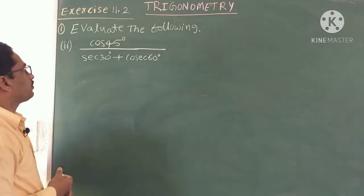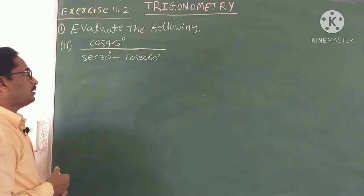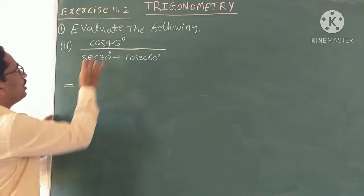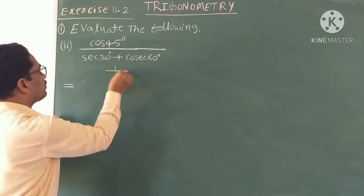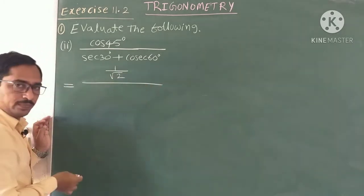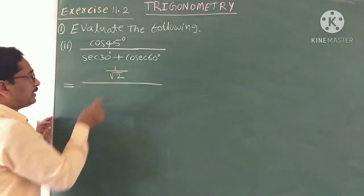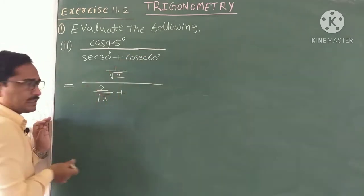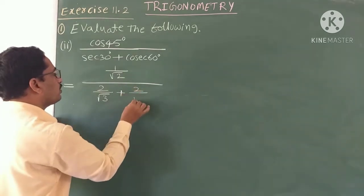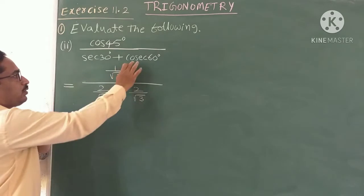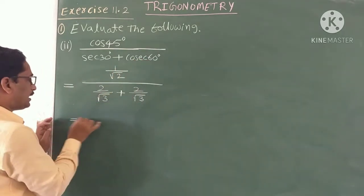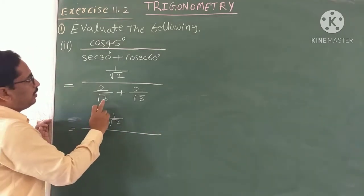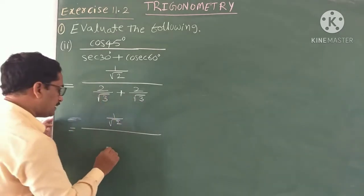Now see the second one: cos 45 degrees divided by (sec 30 degrees plus cosec 60 degrees). Write the values. Cos 45 = 1 by root 2. Sec 30 = 2 by root 3, plus cosec 60 which is also 2 by root 3. Sec 30 and cosec 60 are both the same. So put the numerator as 1 by root 2. In the denominator, root 3 is common, so LCM is root 3.